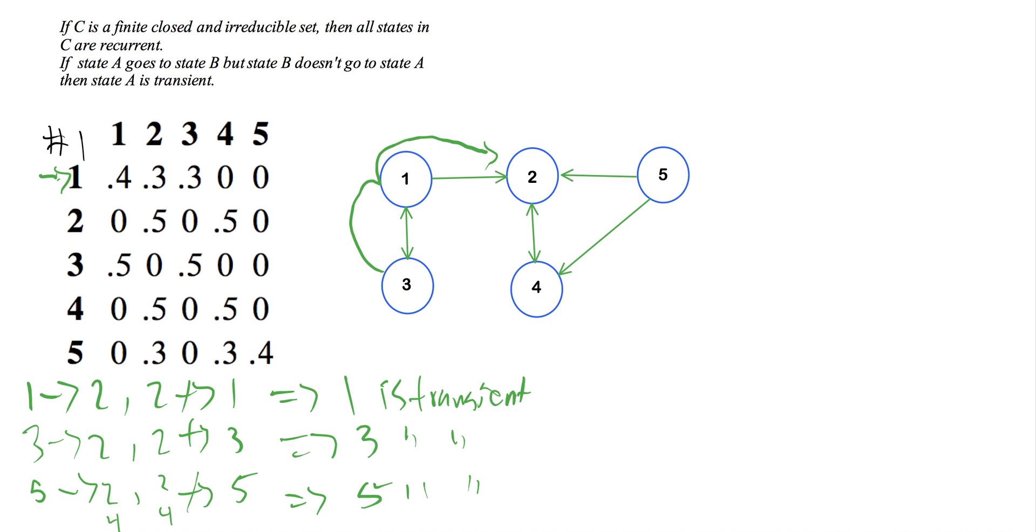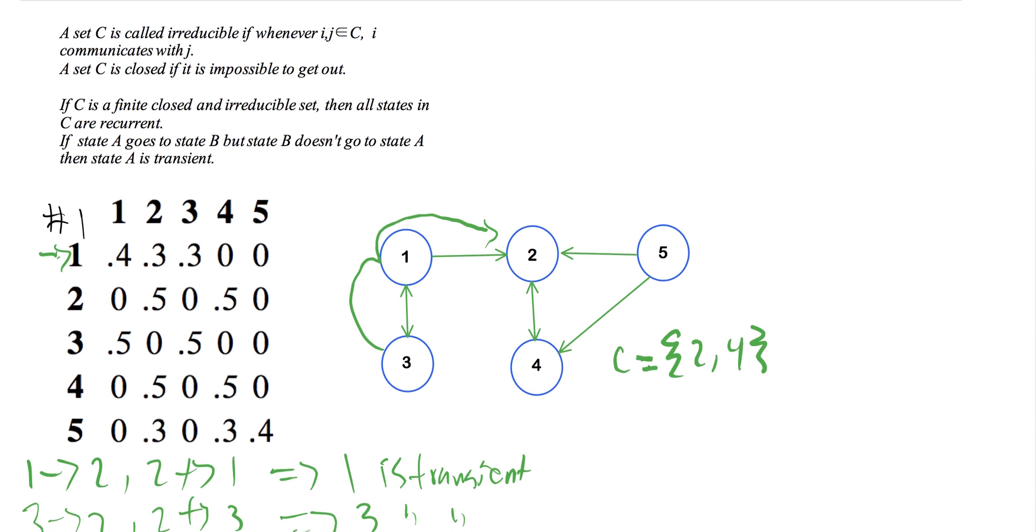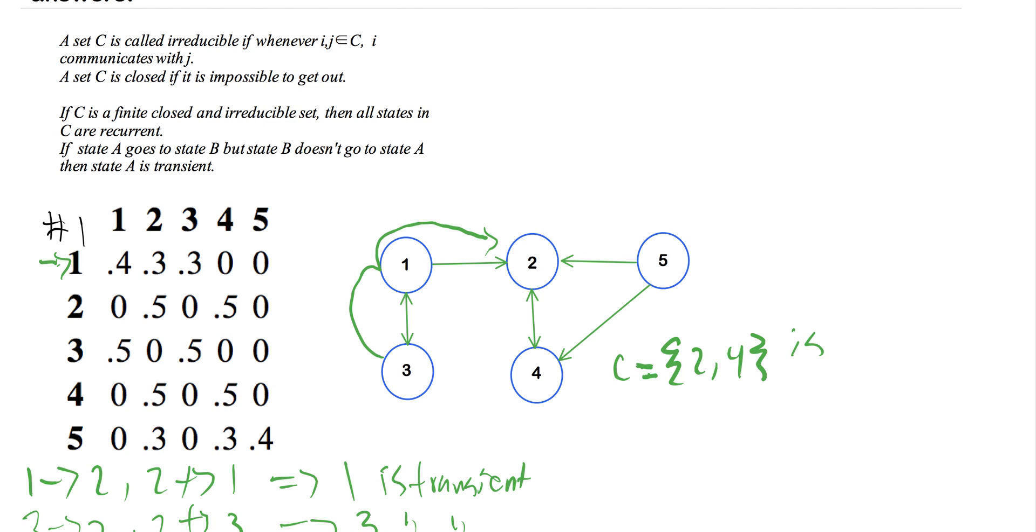two communicates with four and four communicates with two. So that would make this set irreducible. If we have this set, let's name it C to use the same notation as the definitions. So this is irreducible.